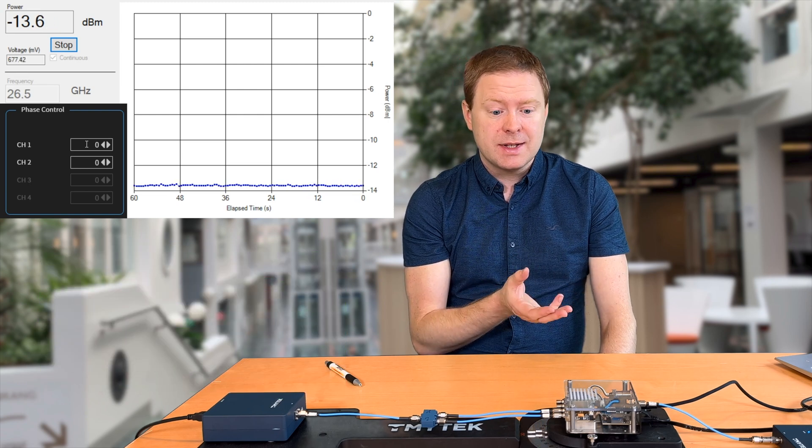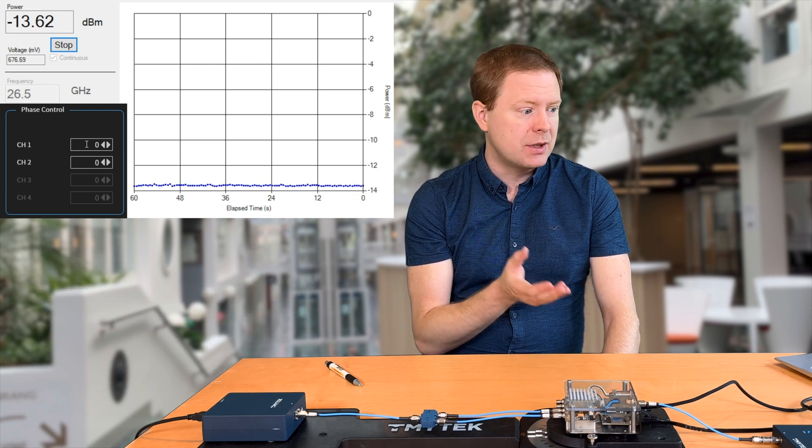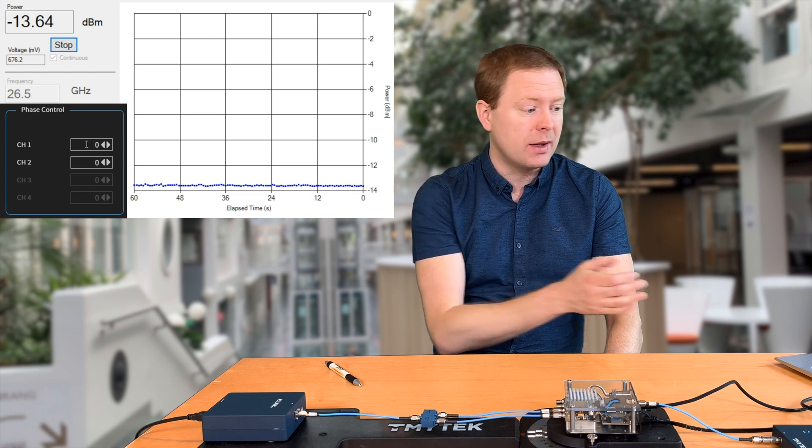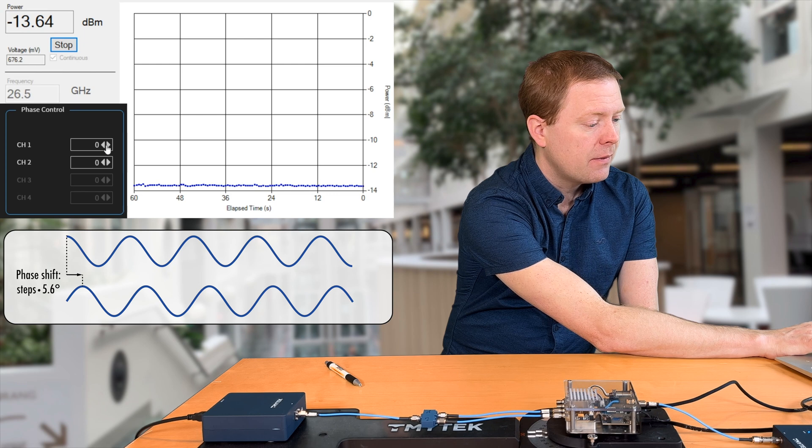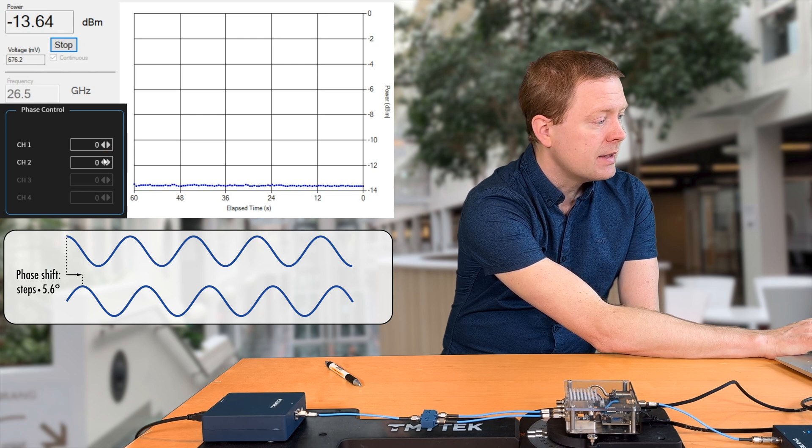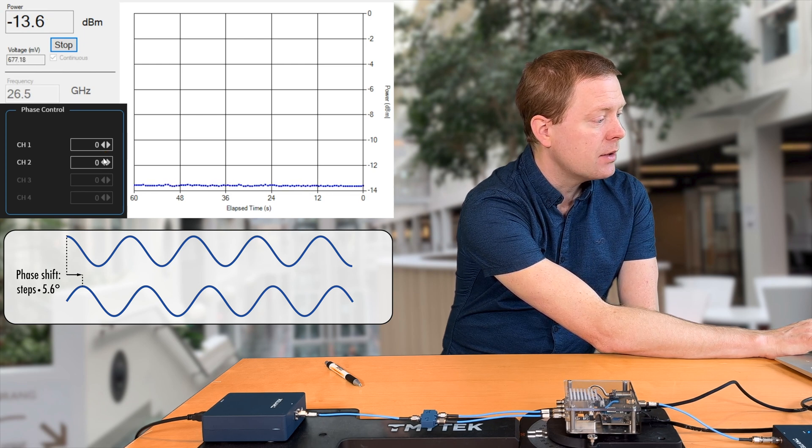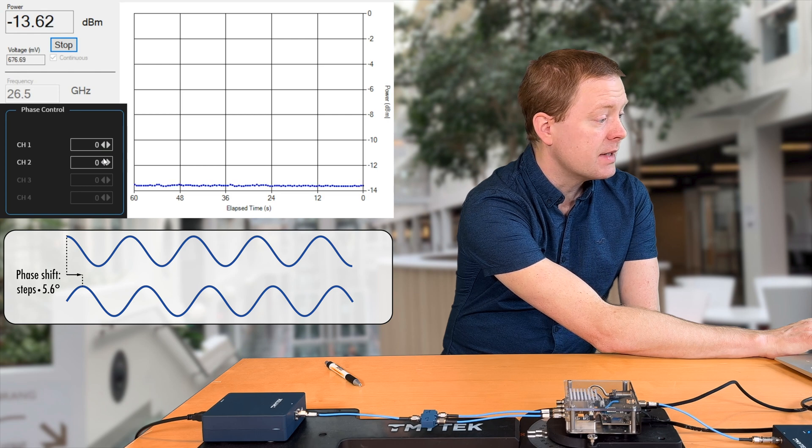What we will see now is what happens when I'm shifting one of them with respect to the other one. Right now in the interface, we see that they have the same phase shift. And we see that the received signal power is minus 13.6 dBm.